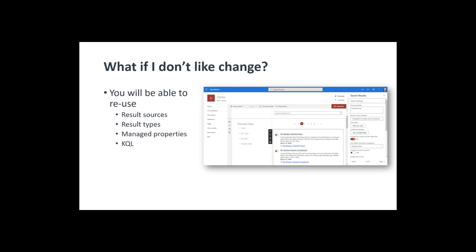If you don't like change — the good news, which has become clearer in the last six months, is that Microsoft is taking a good direction by reusing a lot of prior technology. Verticals are like result sources, result types are very similar, it'll be able to use managed properties, and you're still using keyword query language (KQL) — which is what we use to build searches in classic search. Being able to reuse those skills will be really critical.